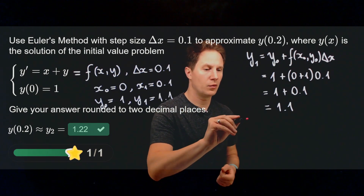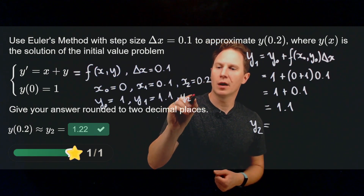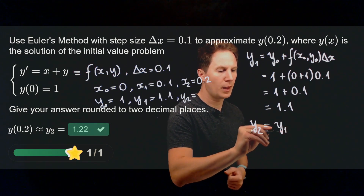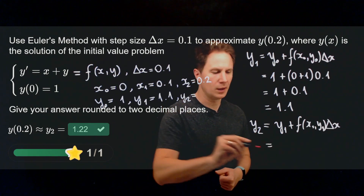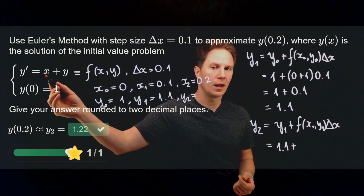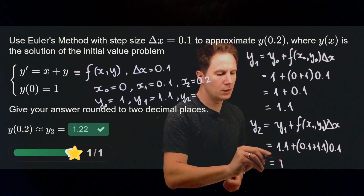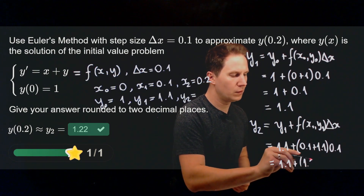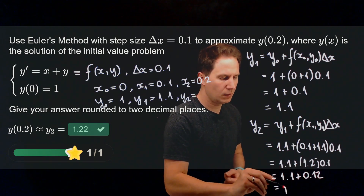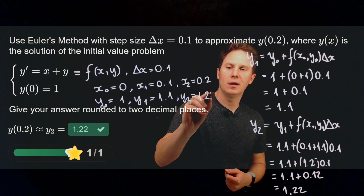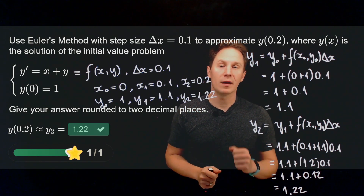Now we need y₂, taking another step: x₂ = 0.2, and y₂ = y₁ + f(x₁, y₁) · Δx = 1.1 + (x₁ + y₁)(0.1) = 1.1 + (0.1 + 1.1)(0.1) = 1.1 + (1.2)(0.1) = 1.1 + 0.12 = 1.22. Therefore y₂ ≈ 1.22 is the approximation of the solution y at 0.2. I hope you enjoyed this video and I'll see you in the next one.